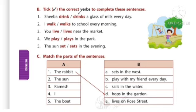First: Sheba drink or drinks a glass of milk every day? It shows a habitual action, so we need to add S with the verb. The answer is: Sheba drinks a glass of milk every day. Second: I walk or walks to school every morning? The pronoun is I — I is a plural pronoun, so we use the original form of the verb. The answer is: I walk to school every morning.